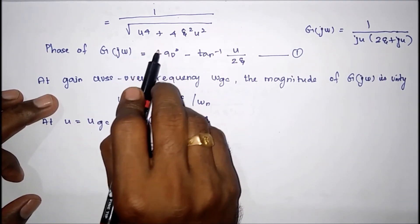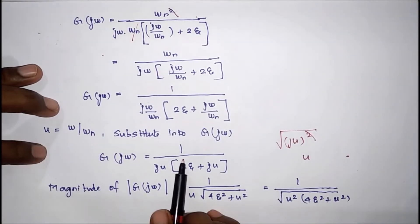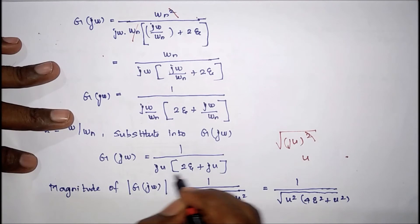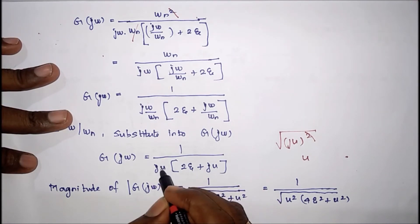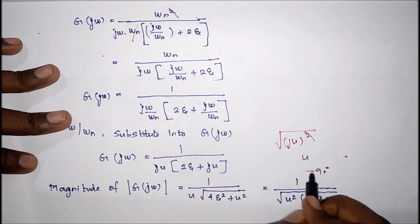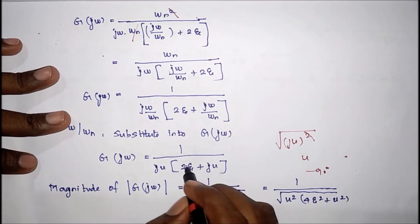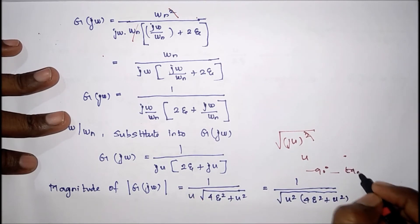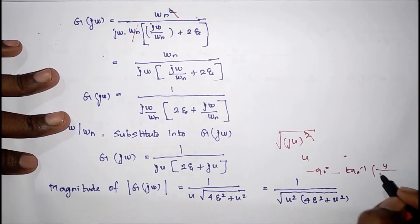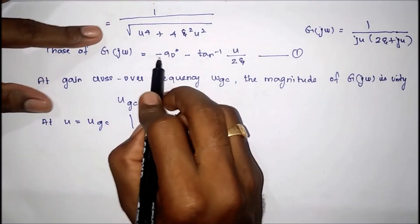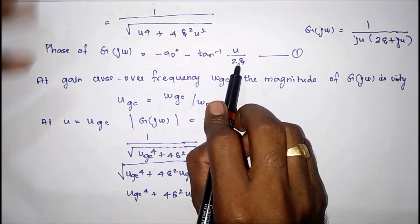This is the magnitude expression. For the phase: the first s term in the denominator contributes −90°, the second s term also in the denominator contributes another −90°, and the complex term contributes −tan⁻¹(u / 2ζ). Therefore the total angle is: −90° − tan⁻¹(u / 2ζ). This is equation number one.